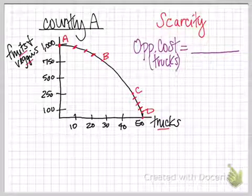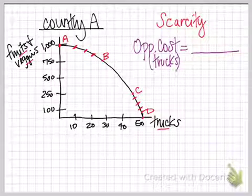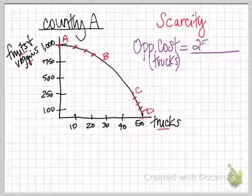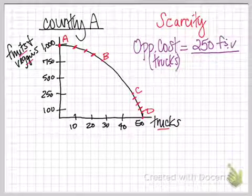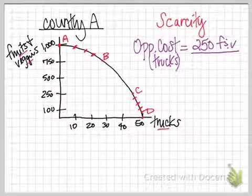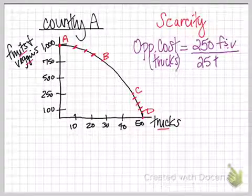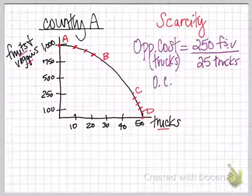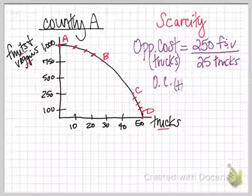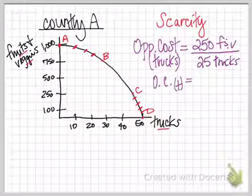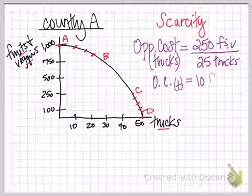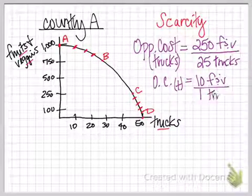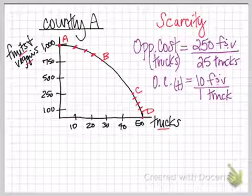So if we move from point A to point B, we give up 250 fruits and vegetables, but we gain, let's just call that 25, we gain 25 trucks. So if we do the math out, we would see that our opportunity cost of trucks is 10 fruits and vegetables, 10 units of fruits and vegetables per one truck.